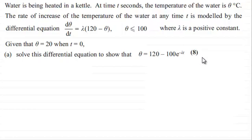So if you'd like to have a go at this, I'll just give you a moment to pause the video. When you come back, I'll take you slowly through the work solution. Okay, welcome back then if you had a go. Well first of all, we just copy down what we're given here: dθ/dt = λ(120 - θ).